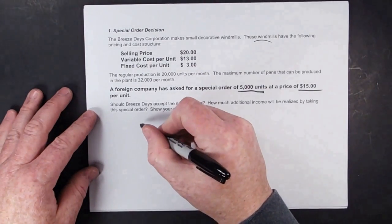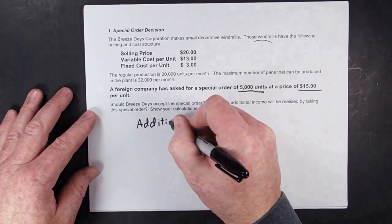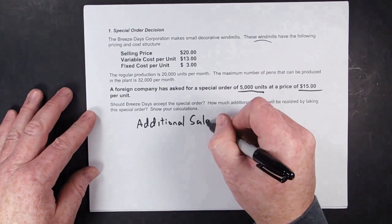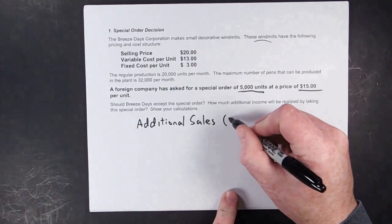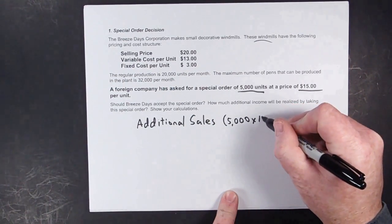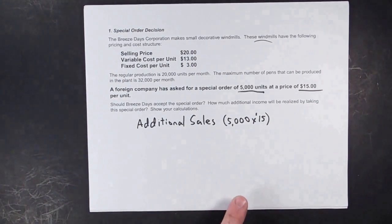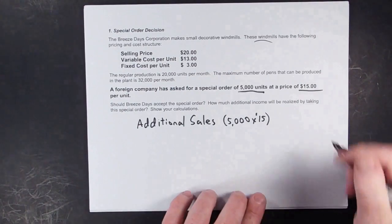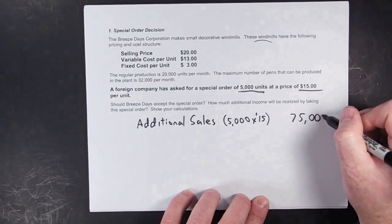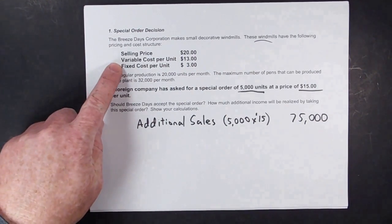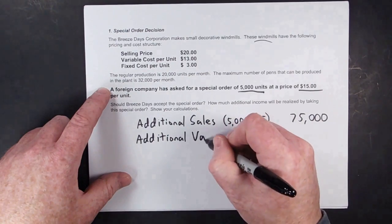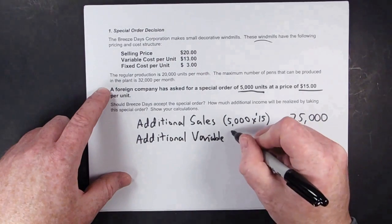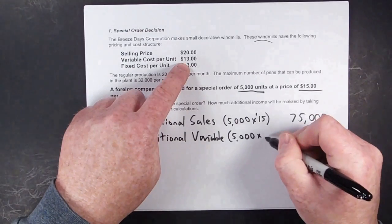Let's take a look at our additional sales if we take this special order. We're going to sell them 5,000 units at $15 each. We'll also have additional variable costs — that's going to be 5,000 units at $13 each.